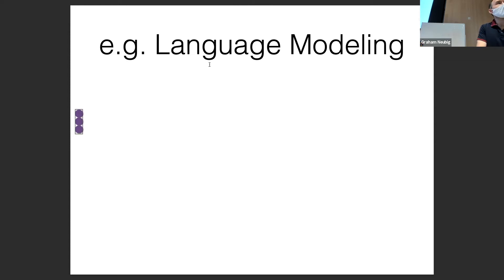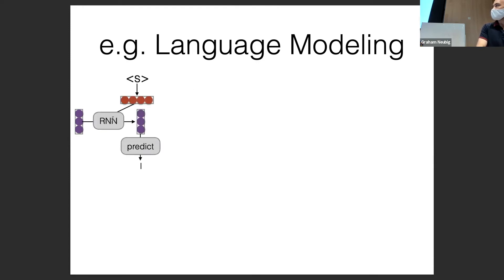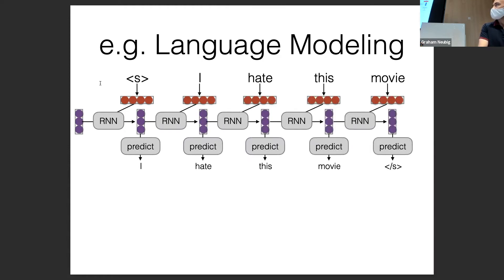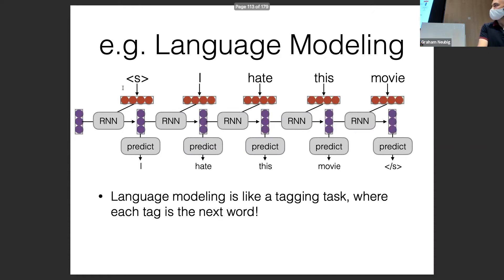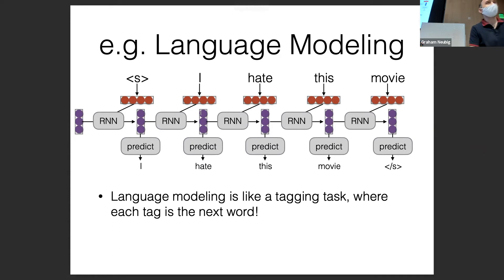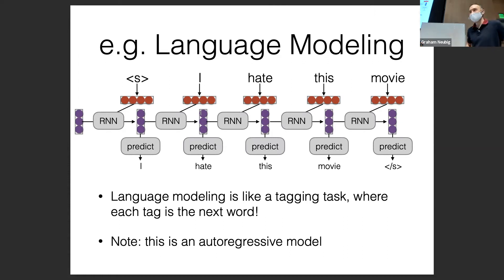RNNs can also do language modeling. You take an RNN, start with a start-of-sentence token, condition on the previous word, and predict the next word. This is essentially like a tagging problem where each tag is the next word you want to predict.